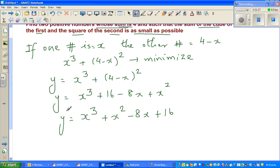So that's x cubed plus x squared minus 8x plus 16. Now you want to minimize this function—this is the sum of the cube of the first number and the square of the second. So S will make more sense, so this is the sum.